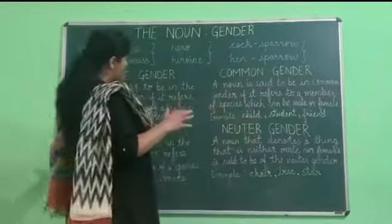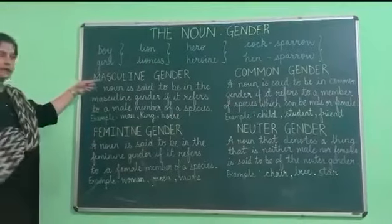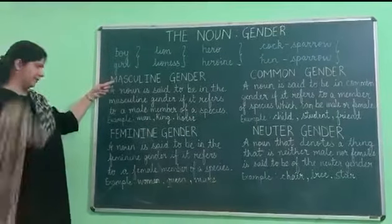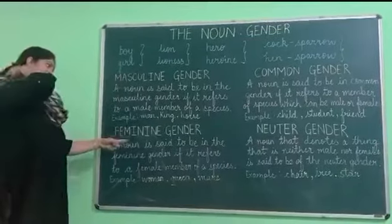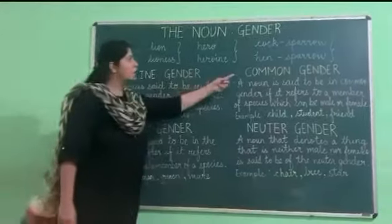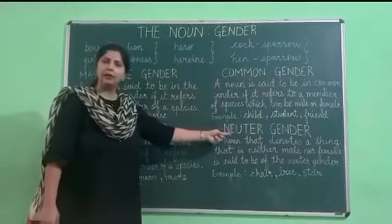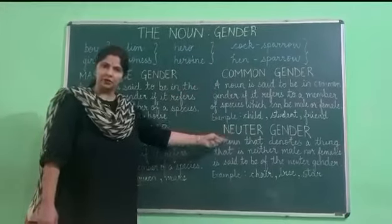There are four kinds of gender: the masculine gender, feminine gender, common gender, and neuter gender.